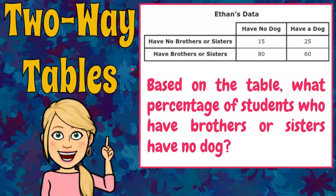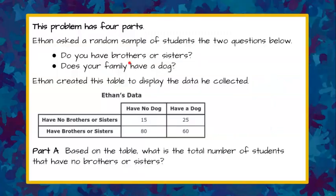Welcome to The Magic of Math, where today we're going to answer a standardized math test question about two-way tables. This problem has four parts. I will read each part and ask you to pause to solve. Ethan asked a random sample of students two questions: Do you have brothers or sisters? Does your family have a dog? Ethan created this table to display the data he collected.